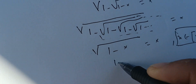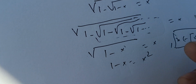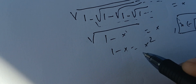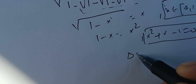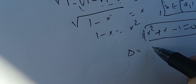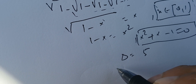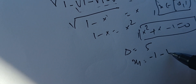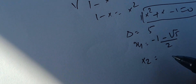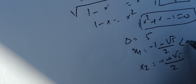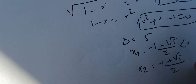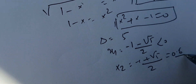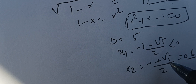Squaring both sides gives 1 − x = x², which is positive, so we don't worry about absolute values. Rearranging: x² + x − 1 = 0. Using the discriminant, Δ = (−1)² − 4(1)(−1) = 5. So x₁ = (−1 − √5)/2, which is negative and not in (0,1), and x₂ = (−1 + √5)/2, which is approximately 0.6 — this is in the domain. Therefore, x₂ is a solution.